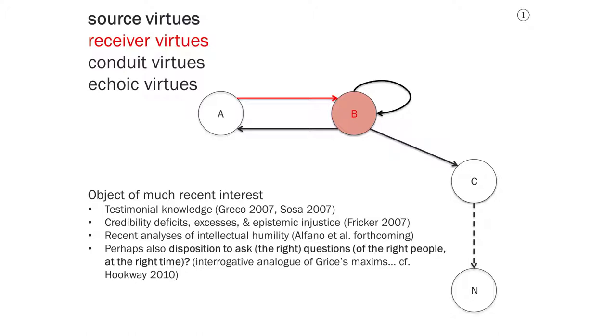These are the virtues that make someone an excellent receiver of communication from another rather than an excellent source of information for another person. They relate to testimonial knowledge, so someone who is an excellent receiver, who has virtues related to receiving communication, is more likely to acquire knowledge from others and less likely to be deceived by others who are lying or speaking overconfidently, and so on.